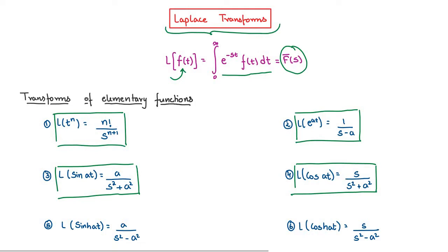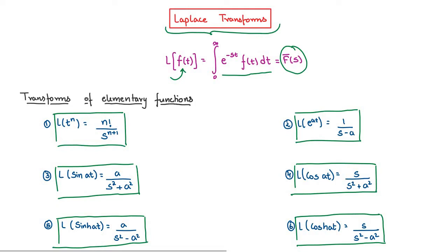Now coming to hyperbolic functions. The Laplace transform of sinh at is equal to a by s squared minus a squared, and the Laplace transform of cosh at is equal to s by s squared minus a squared.